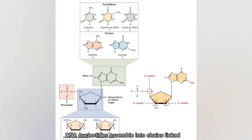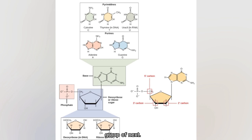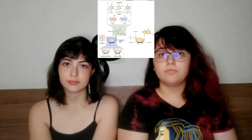DNA nucleotides assemble into chains, linked by covalent bonds, which form between the deoxyribose sugar of one nucleotide and the phosphate group of the next. This arrangement makes an alternating chain of phosphate and deoxyribose sugar groups, and DNA forms a backbone structure known as the sugar-phosphate backbone.